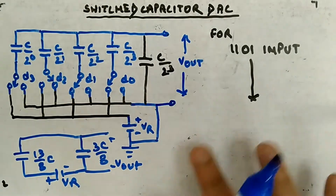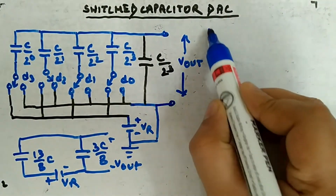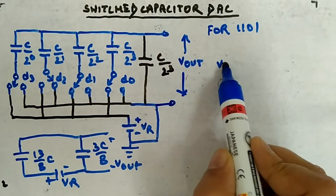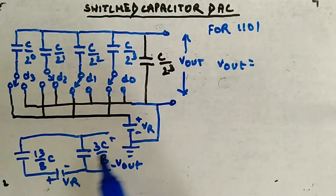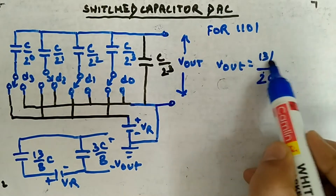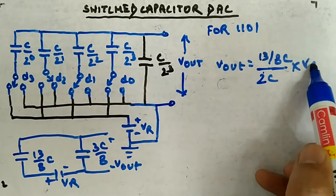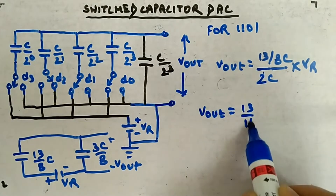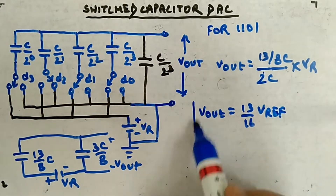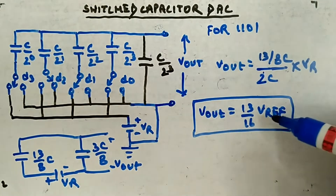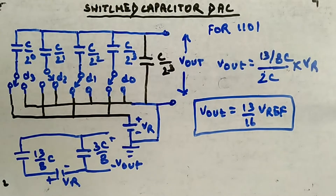Now you have a voltage source and two capacitances, so you can apply voltage division. Vout equals C equivalent divided by 2C total, into Vr. The C cancels, giving 13 divided by 16 times Vref. So this will be the output analog voltage for the input 1101. Only this numerator value changes according to the input; Vref stays the same. This is about the switched capacitor DAC.